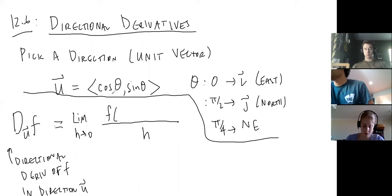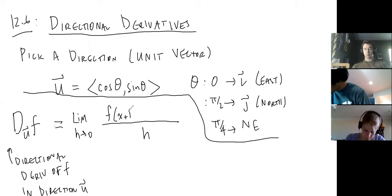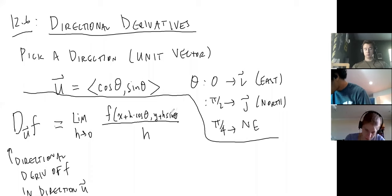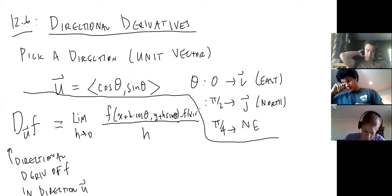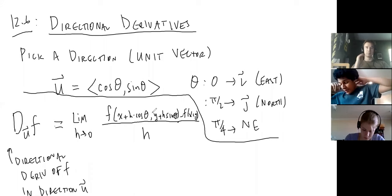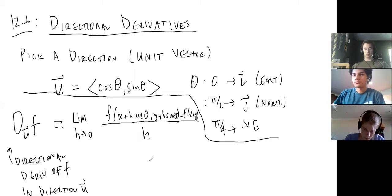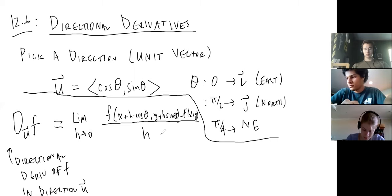We split the h across the unit vector components: x plus h times cosine θ, and y plus h sine θ. So h is not all in the x-direction or all in the y-direction — it's like a rise in the northeast direction (say 45 degrees), or whatever angle, divided by the run. That's the limit you have to work out, and it can be tricky.